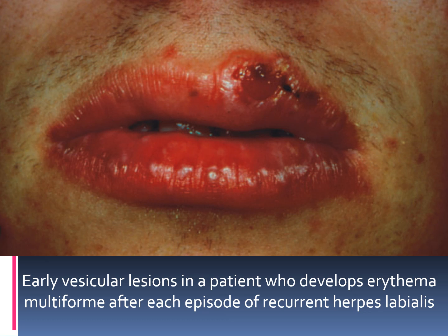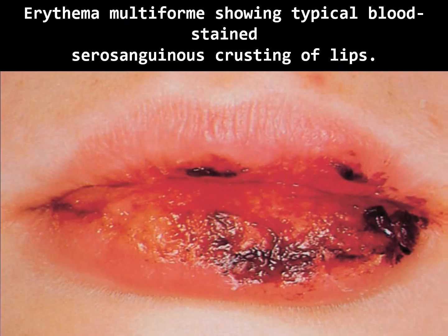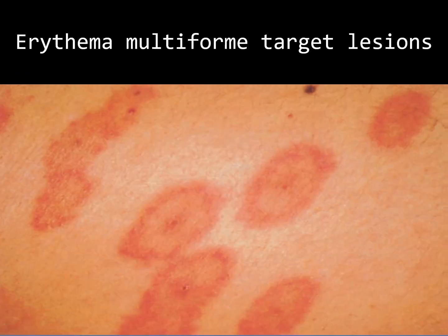Early vesicular lesions in a patient who develops erythema multiforme after each episode of recurrent herpes labialis. Intraoral lesions of erythema multiforme, showing typical blood-stained, serosanguinous crusting of the lips.